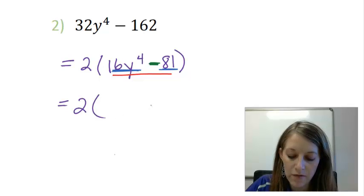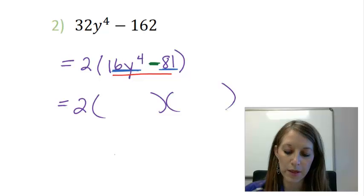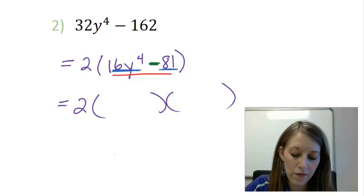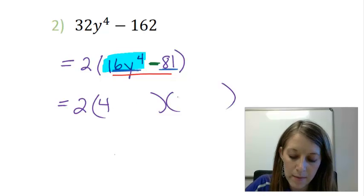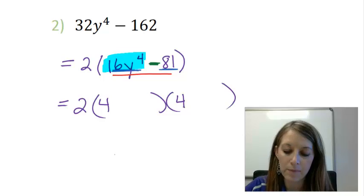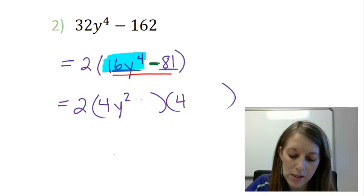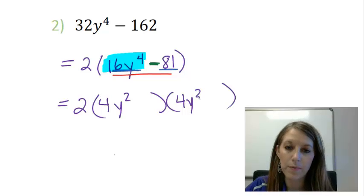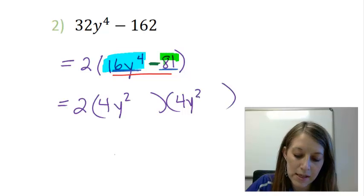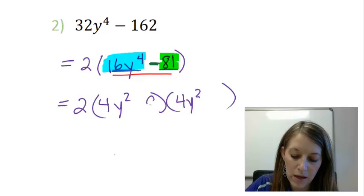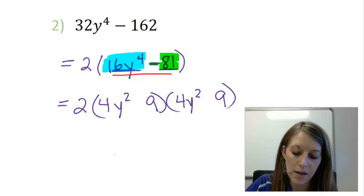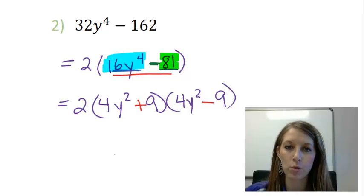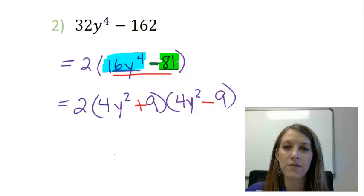So copy down your common factor of 2 and set up your two sets of parentheses. In your first place here, split that up into two equal parts. So I'm going to do 4 times 4 gives me 16. And y to the 4th will come from y squared y squared. Moving to the last place, 81. Factors of that will give me 9 times 9. And the operations of difference of squares is always one addition and one subtraction.